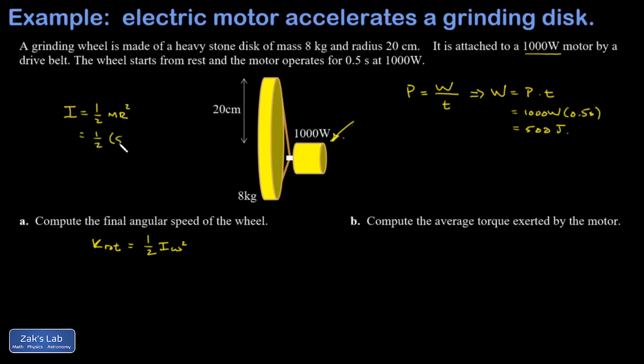That gives me one half times the mass of this thing, that's eight kilograms, times the radius, 0.2 meters squared. And my moment of inertia comes out to 0.16 kilogram meters squared.